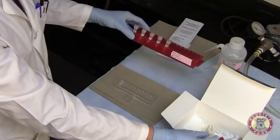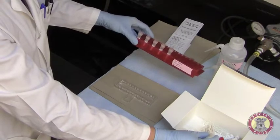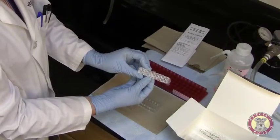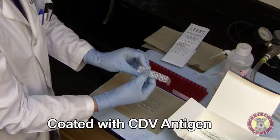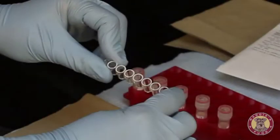We'll be running five unknown samples today in addition to a positive and a negative control. The wells included within this kit are coated with canine distemper virus or CDV antigen. I've broken off seven wells for our five samples and one well for our positive control and one well for our negative control.